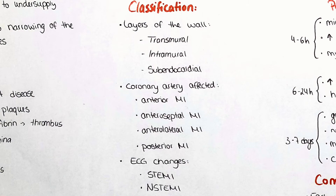We can classify myocardial infarction according to a variety of indicators. One of them is which layer or layers of the heart are involved. It can be a transmural myocardial infarction affecting the entire diameter of the wall, intramural affecting only parts of the wall, or subendocardial affecting only the tissue under the endocardium.